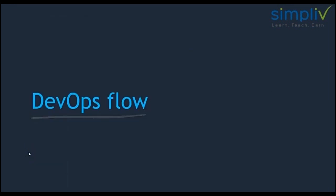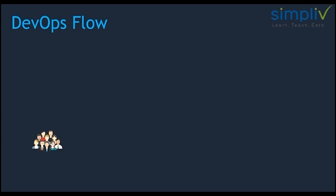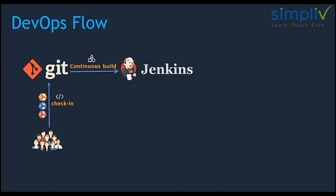Now let's see how Git fits in our DevOps flow. Developers develop their code and push it into a Git repository. Git is a source code management system. Whenever code is available in Git, Jenkins pulls that code and does the build. Once the build is completed, it generates an artifact. This artifact should be deployed into a target environment, which may be a VM, a Docker container, or a Kubernetes cluster.